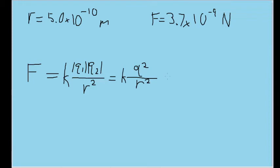And now, we rewrite this formula to solve for Q. We multiply both sides by R squared, divide both sides by K, and take the square root to get Q on its own.